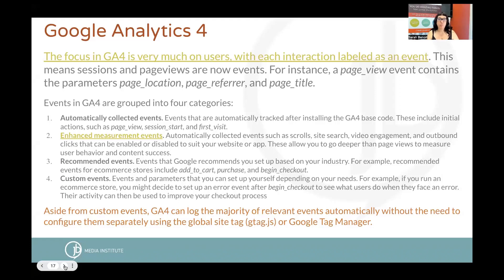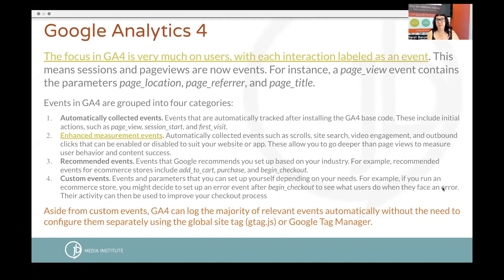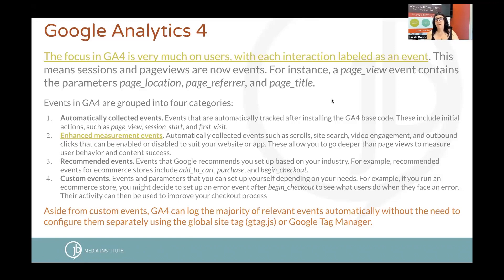I've put together some great slides here explaining events in more detail, because understanding this new paradigm is key. Events - or people and each interaction they have - are categorized into four different types. This is related to what we formerly thought of as conversion tracking. Events existed in Universal Analytics but most people didn't really dive into them because it was a little more advanced and more difficult to DIY. Now we're all going to be forced to really understand this better.